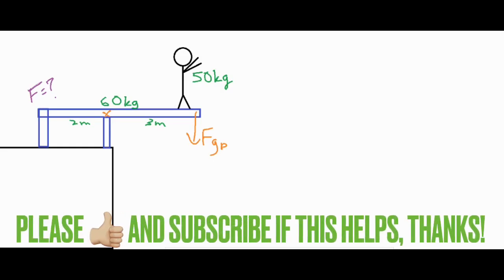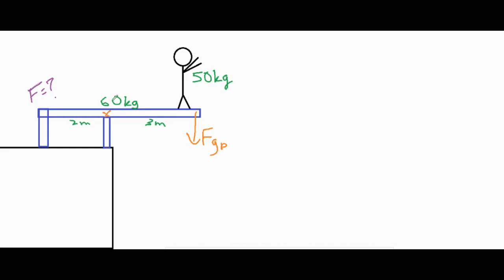And then secondly we have the actual weight of the beam itself and the weight of the beam or the mass of the beam is 60 kilograms. Now if we were to find the center of mass we want to find the center of the entire object.